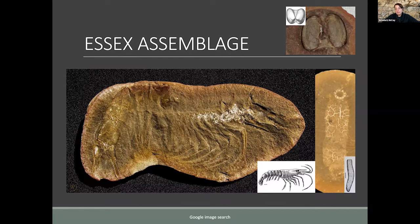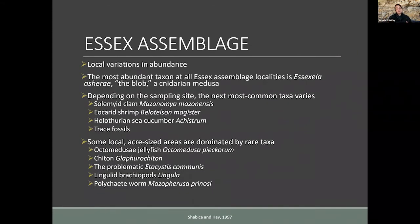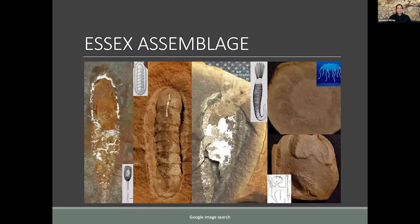All of these taxa are very common in general in the Essex, but locally one might edge out the others for second most abundant. There are also smaller local, acre-sized areas dominated by taxa that are otherwise very rare in the Essex assemblage. These include the Octomedusa jellyfish Octomedusa picticoloris, the chiton Glyphochiton, the problematic Aedacistus communis whose phylum is not yet known, the lingulid brachiopod Lingula, and the polychaete fan worm Mazonipterus operculatus.